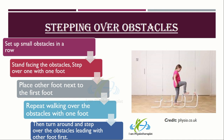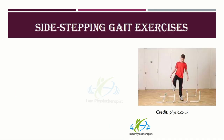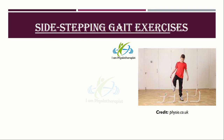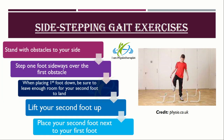Repeat walking over the obstacles for 10 repetitions. Once obstacle stepping has become easy, when stepping forward over the hurdles, you can try stepping over sideways. This alteration to normal forward gait can help you move in different directions while walking.